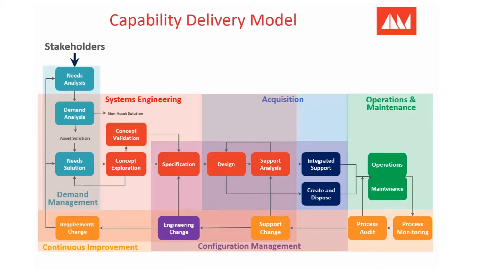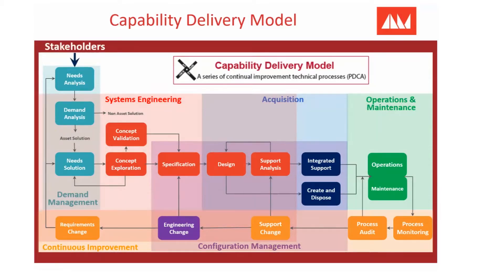Continued improvement along the bottom, we've just talked about. The whole thing is called the capability model, but it's essentially the process model — a process view of how you do this stuff called asset management. These coloured boxes, like demand management and systems engineering, are the various disciplines that come together. Asset management is nothing new; all it's doing is stitching together all these disciplines into one integrated approach.